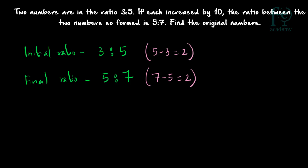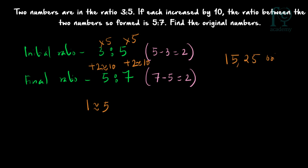The next step: how do you get from initial ratio to final ratio? 3 plus 2 equals 5 and 5 plus 2 equals 7, so plus 2 converts the initial to final ratio. Your 2 is equivalent to 10 — if each is increased by 10 you get the final ratio. So 2 is equivalent to 10, meaning 1 is equivalent to 5. Your original numbers are 3 into 5 and 5 into 5, giving 15 and 25.